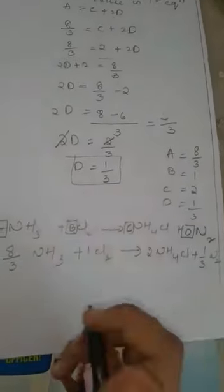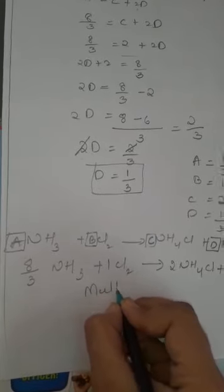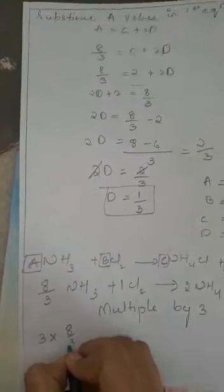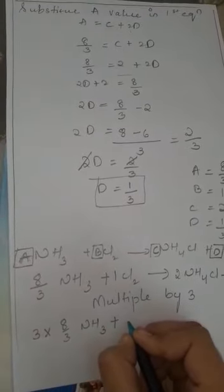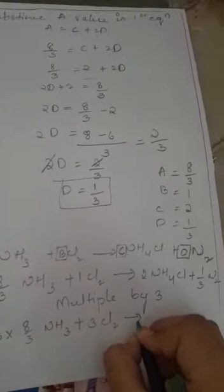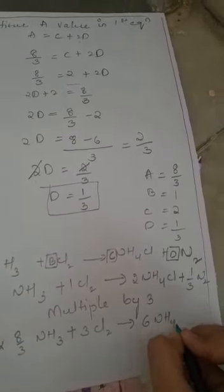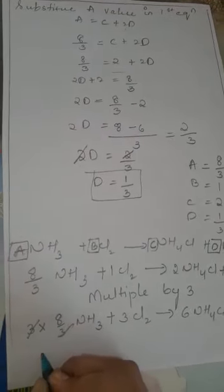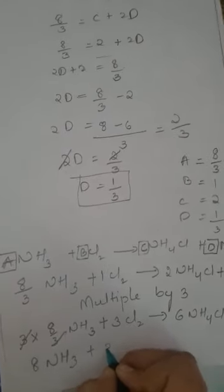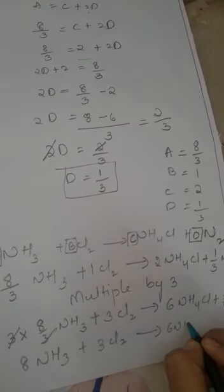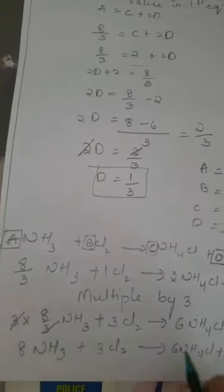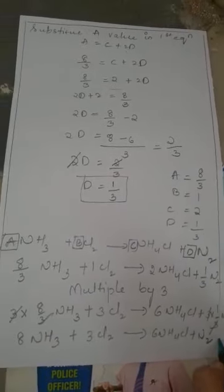Since the denominator is 3, we multiply the whole equation by 3. So 3 into 8/3 NH₃ gives 8 NH₃; 3 into 1 Cl₂ gives 3 Cl₂; 3 into 2 NH₄Cl gives 6 NH₄Cl; and 3 into 1/3 N₂ gives N₂ (3s cancel). The final balanced equation is: 8 NH₃ + 3 Cl₂ → 6 NH₄Cl + N₂. This is the complete balanced equation. Thank you.